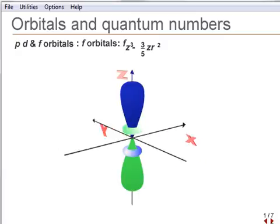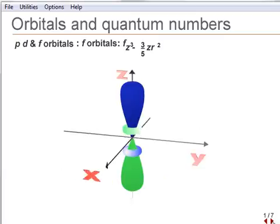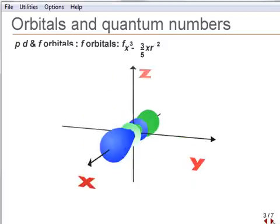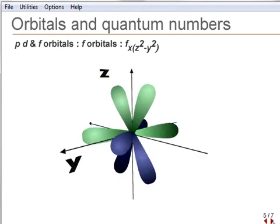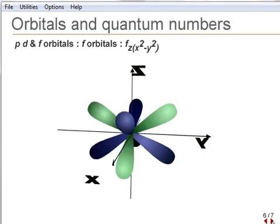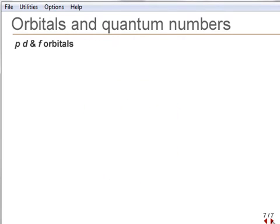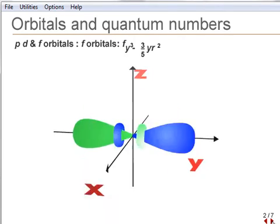F-orbitals have L equals 3, and seven allowed n values of minus 3, minus 2, minus 1, 0, plus 1, plus 2, and plus 3. There are seven F-orbitals which exist for n equals 4 or greater.